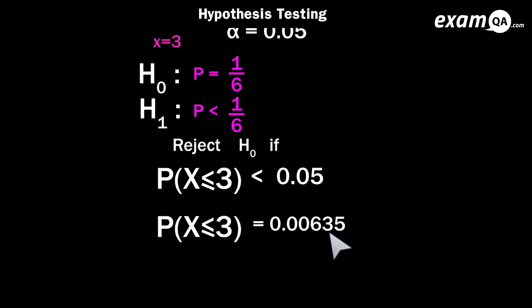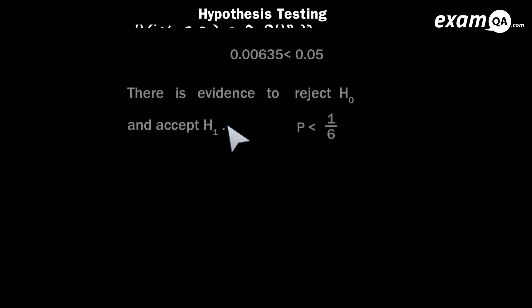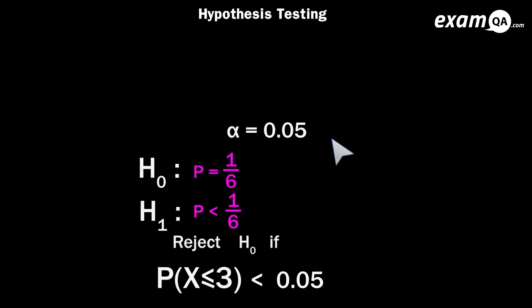So what we're going to do, we're going to reject the fact that P equals 1 over 6 which is our H0 and accept our alternative hypothesis which is P is definitely less than 1 over 6. So simply now just say there's evidence to reject H0 and accept H1. P is less than 1 over 6. Okay so that wasn't too difficult.